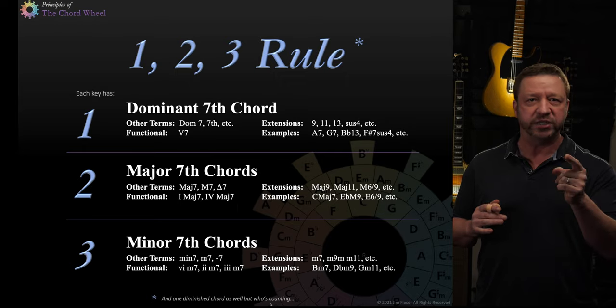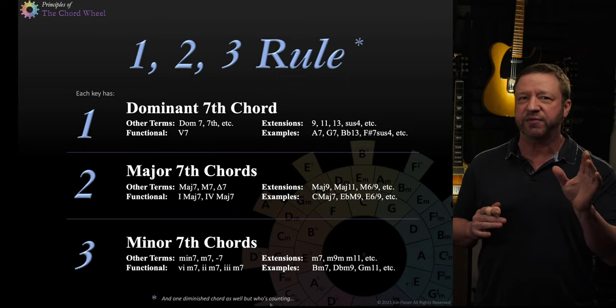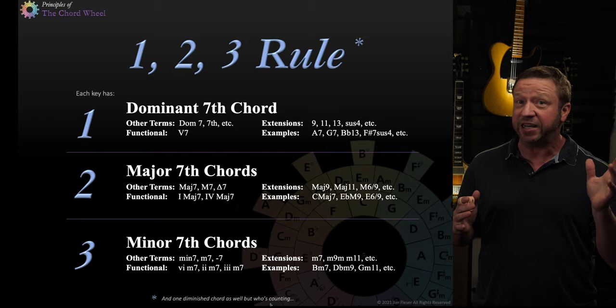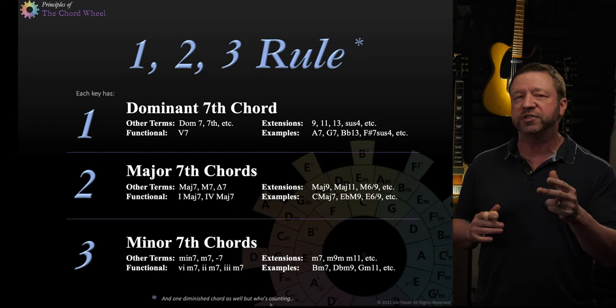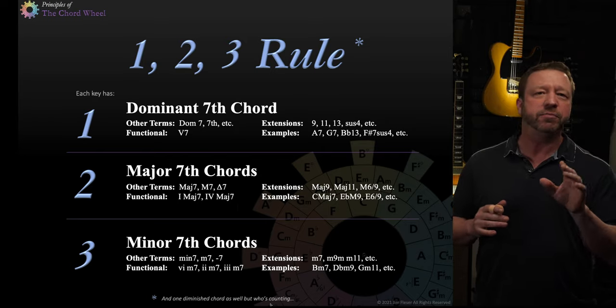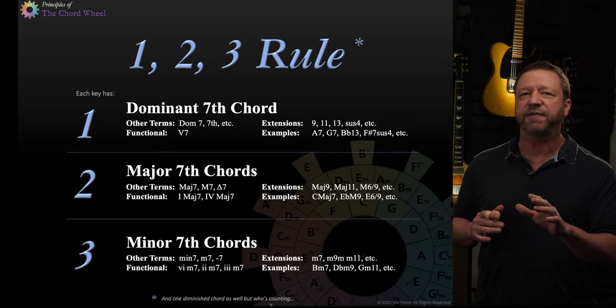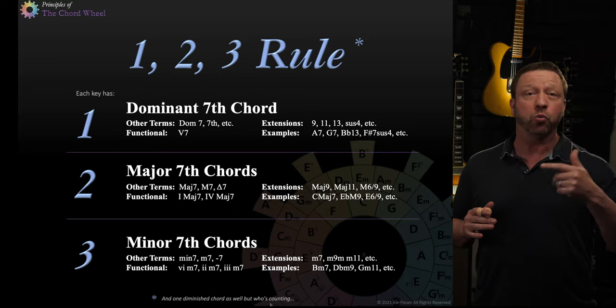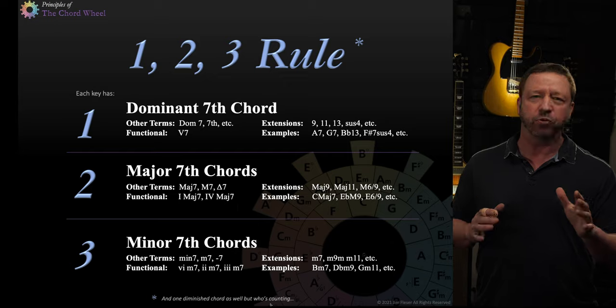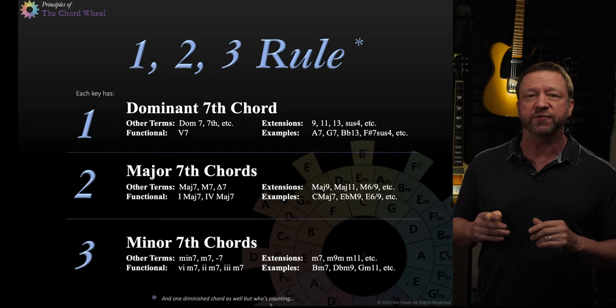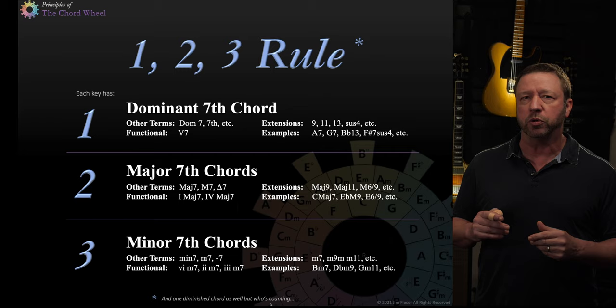So if you ever see a dominant seventh, you know it can only belong diatonically to one key. There are two major sevens, three minor sevens, and then the diminished chord becomes a minor seven flat five. And yes, that would be another one, but you don't see that a lot in pop rock progressions. Jazz, of course, is a different story. But a great way to get started, the one, two, three rule.